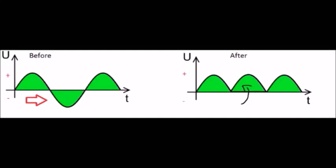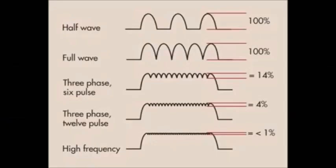Full-wave rectification reverses the negative half cycle so that the anode is always positive; the exposure time for a given technique is cut in half. Although full-wave is a step up in efficiency, it still contains 100% voltage ripple, where voltage gets down to zero at times.